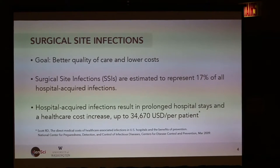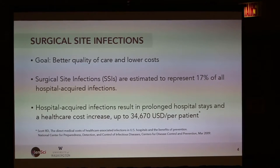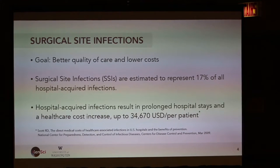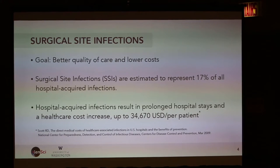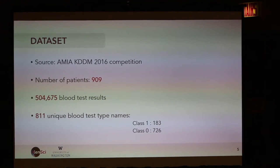The task for the challenge was to predict which patients have a higher risk of getting a surgical site infection. The overall goal in any healthcare problem is to provide better quality of care and reduce costs. Surgical site infections are quite a big chunk of hospital-acquired infections and significantly increase costs for patients. The dataset was provided by the AMIA-KDTM competition organizers — we had 909 distinct patients, around 500,000 blood tests, and 811 unique blood test type names, with variations and duplications within those lab tests as seen in real data.